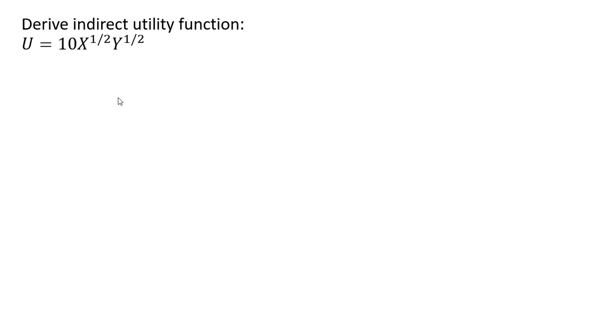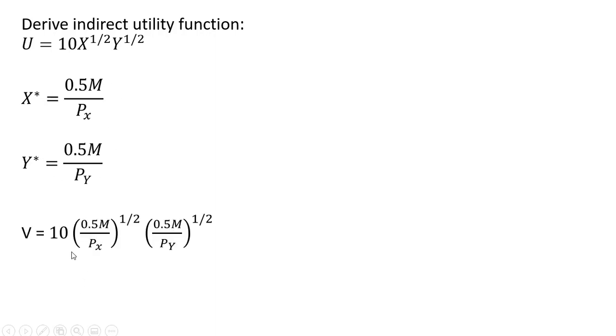Now we're going to derive the indirect utility function. Taking our utility function, we're going to plug in the demand for Good X and Good Y into it. Making our substitutions, here's our indirect utility function, I'm calling that V now. This will simplify down very nicely. We have 0.5M to the one-half times 0.5M to the one-half, that's just 0.5M. And that 0.5M times 10 leaves us with 5M in the numerator. Then we've got Px to the one-half power times Py to the one-half power in the denominator.